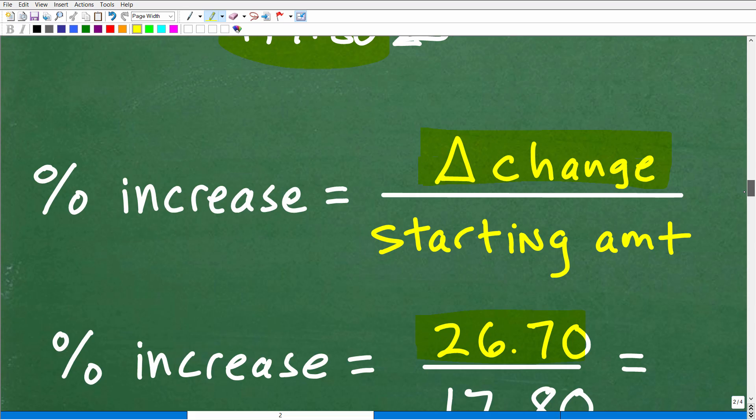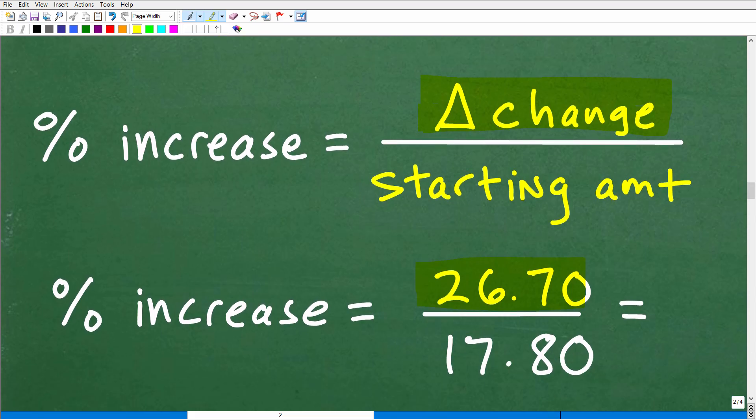Let's take a look at the basic formula for percent of change or percent of increase. The general formula is we need to know the change from the starting amount to the ending amount. This little symbol right here, this triangle, that's called the delta symbol. It just means difference or change. It's a fancy symbol, pretty common in mathematics. This just means subtract the two values of starting and ending amount. So that difference here is 26.70.